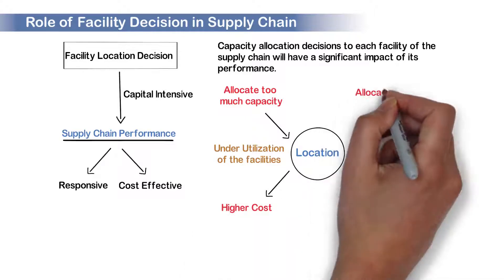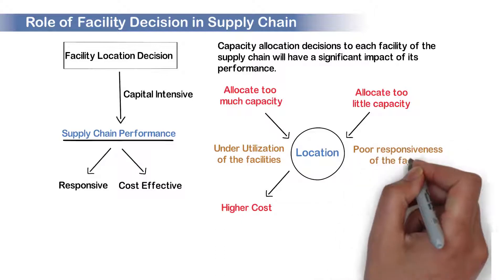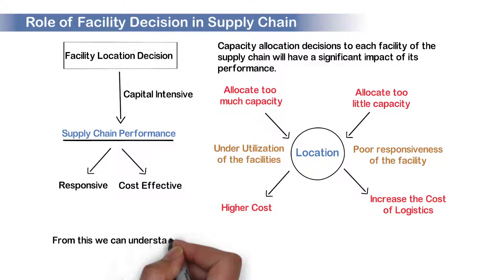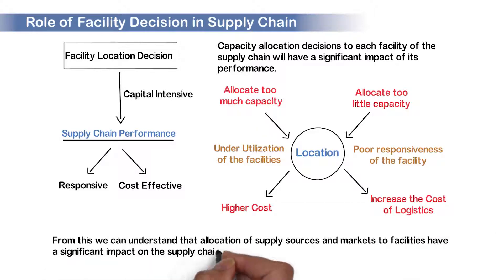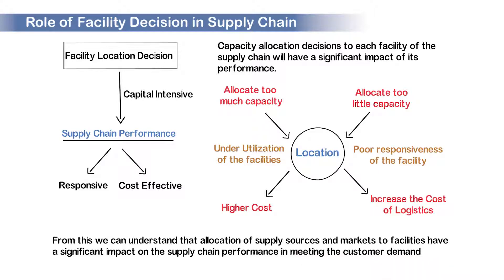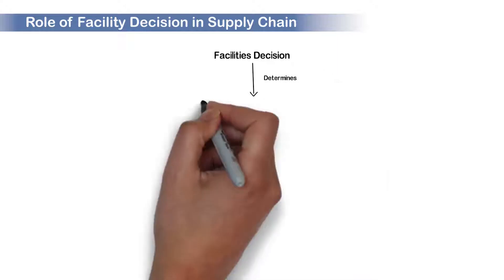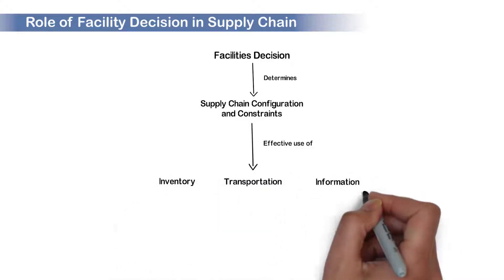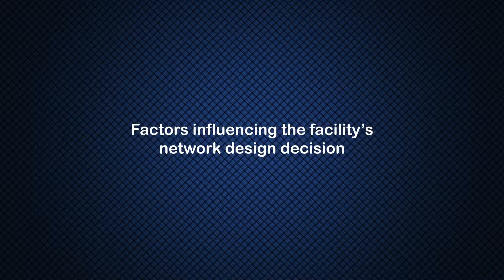Similarly, when we allocate too little capacity to a particular location, it may result in poor responsiveness of the facility of the supply chain, and it may increase the cost of logistics. From this, we can understand that allocation of supply sources and markets to facilities have a significant impact on the supply chain performance in meeting the customer demand. Hence, the facility decision in a supply chain will have a significant impact on its performance as they determine the supply chain configuration and the constraints in which the inventory, transportation, and information can be used effectively to decrease the supply chain cost, as well as increase the responsiveness of the supply chain.